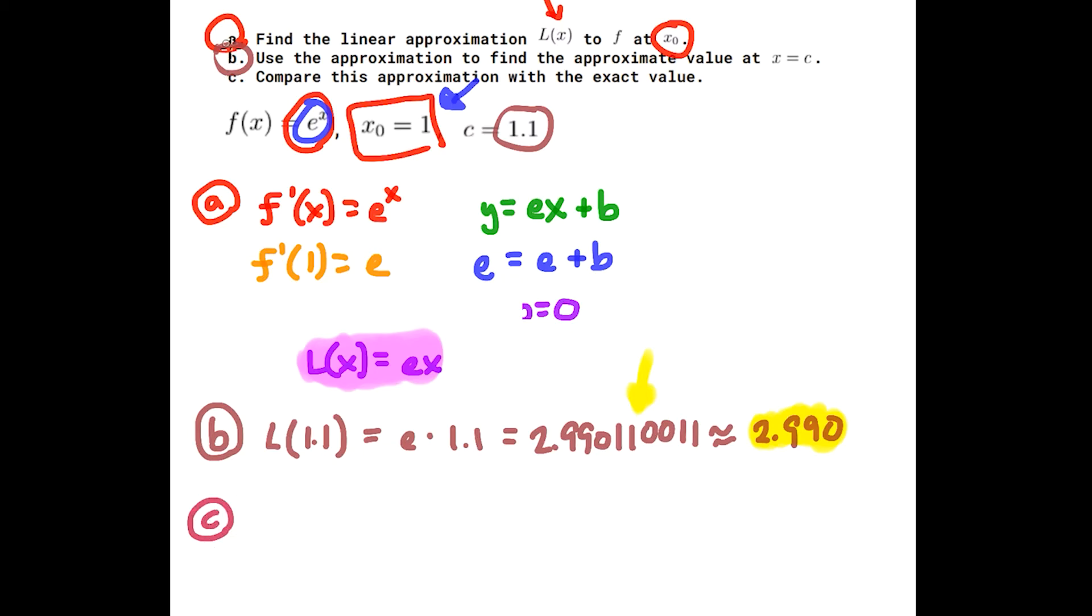Okay, for part c it says compare this approximation with the exact value. So what I'm going to do is subtract those two values. So I'm going to do f(1.1) minus L(1.1). Okay, and I'm doing the absolute value of that. And you end up with 0.014 if we're rounding to three decimal places.